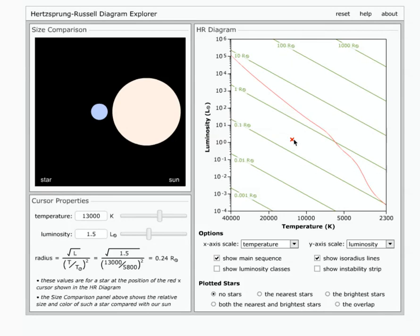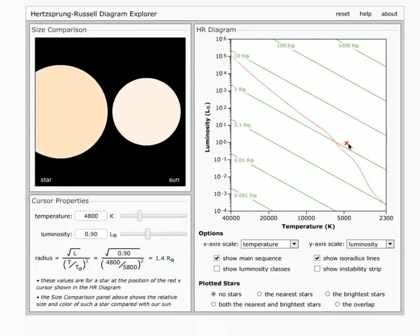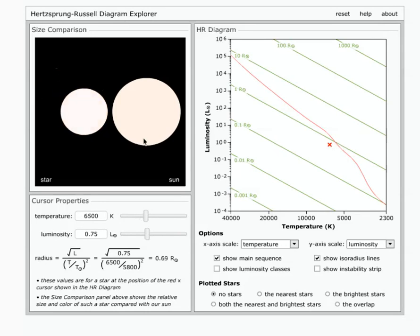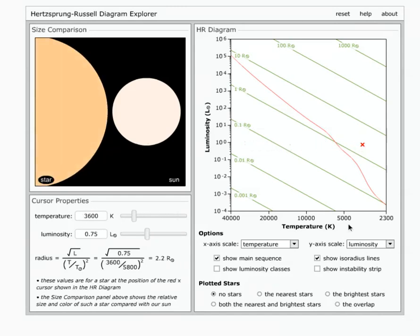A few things we can notice as we explore this HR diagram: I can drag this X around, and you can see how I'm changing a couple different things. As I move the cursor left and right, I can look at my horizontal scale and what I'm changing. I'm changing the temperature of the star.